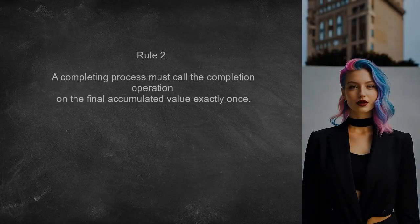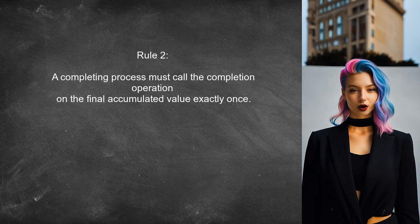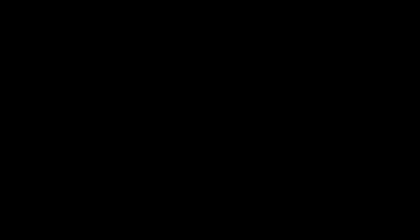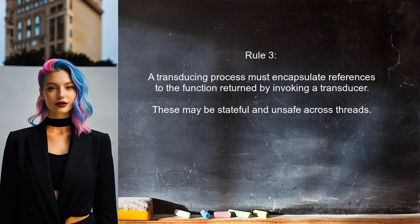The second rule emphasizes that a completing process must call the completion operation on the final accumulated value exactly once. This is crucial for ensuring that your transducer completes its work properly. The third rule warns that a transducing process must encapsulate references to the function returned by invoking a transducer, because these functions may be stateful and unsafe for use across threads.